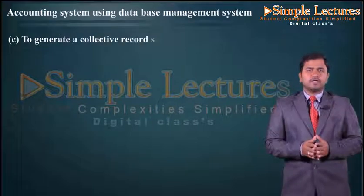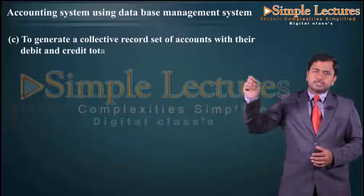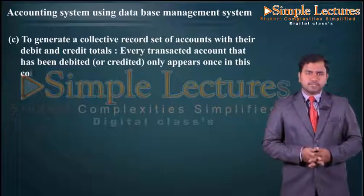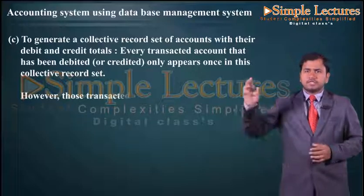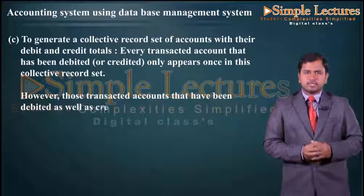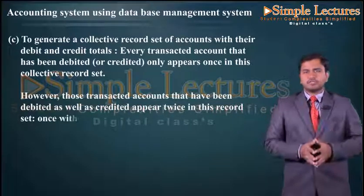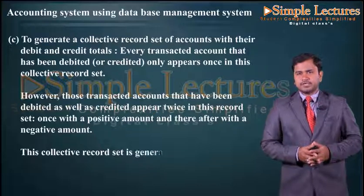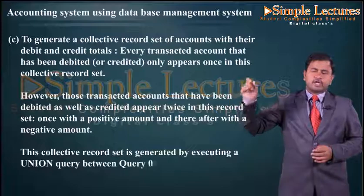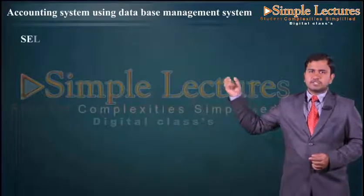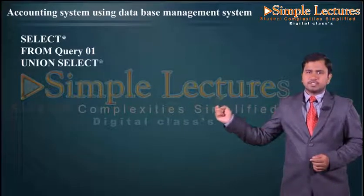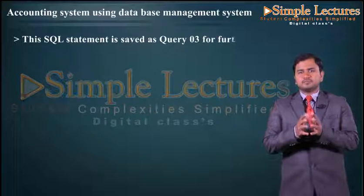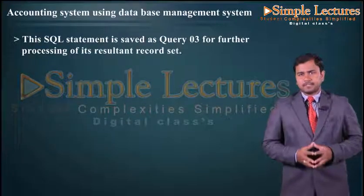To generate a collective record set of accounts with their debit and credit totals, every transacted account that has been debited or credited appears only once. However, accounts that have been both debited and credited appear twice — once with a positive amount and once with a negative amount. This collective record set is generated by executing a union query between Query 01 and Query 02: SELECT * FROM query01 UNION SELECT * FROM query02. This is saved as Query 03.